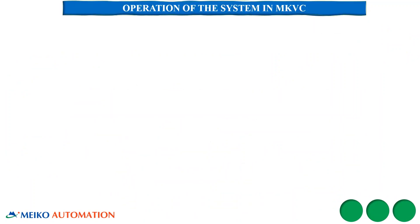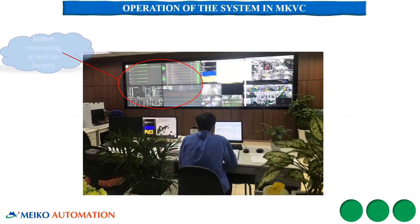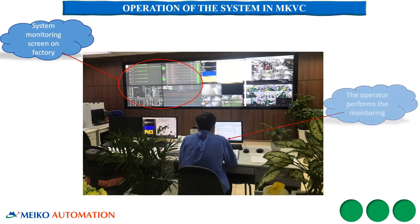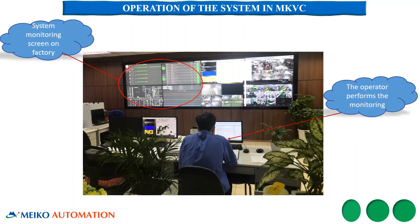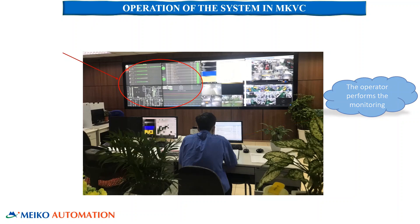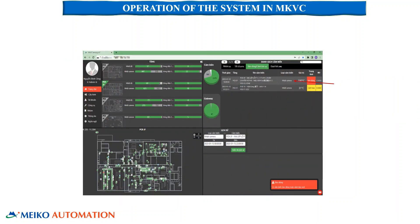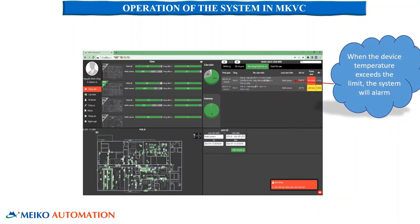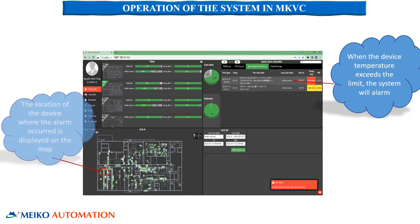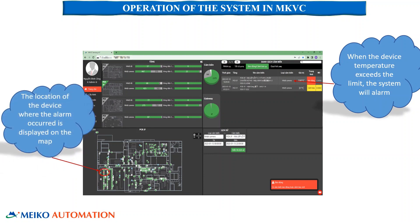Operation of the system at the MKVC factory: the system is shown on a large screen where the operator monitors temperature and amperage of the sensor mounting areas. When an incident such as high temperature or equipment overload occurs, the system will alert the operator to the location of the fault and equipment failure.